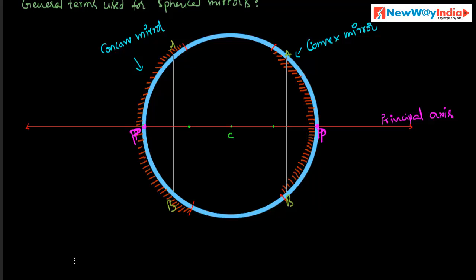Next, principal focus. It is a point on the principal axis. This is a beam of light incident on a concave mirror. These are parallel rays traveling parallel to the principal axis, and after reflection they meet at a point on the principal axis. This point is called the principal focus.